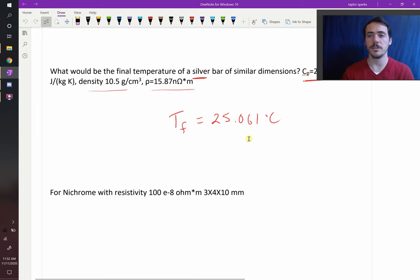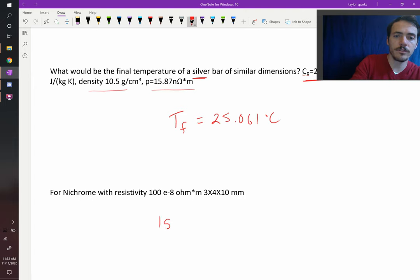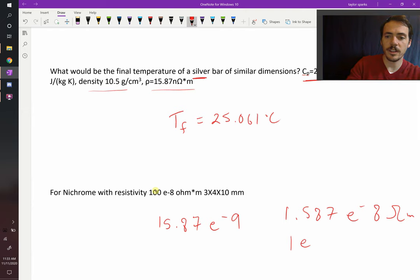However, if you do this with nichrome, you're going to see a big difference. Nichrome is a material that's designed to be very resistive. If you look at its resistivity, it's 100 E to the negative 8 ohm meters. So that is quite a bit more. Compare this to silver: silver was 15.87 E to the negative 9, or 1.587 E to the negative 8 ohm meters. Now compare that to nichrome: 1 E to the negative 6 ohm meters, because it was 100 E to the negative 8. This thing is way, way more resistive, and therefore it's going to generate much more heat.